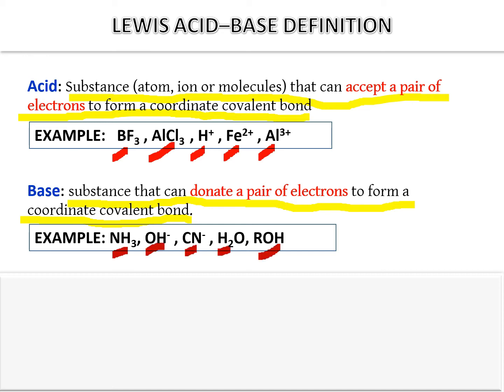For example, if B has a pair of electrons that it donates to A, then B is a base while A is an acid.